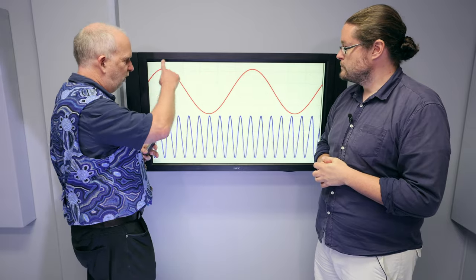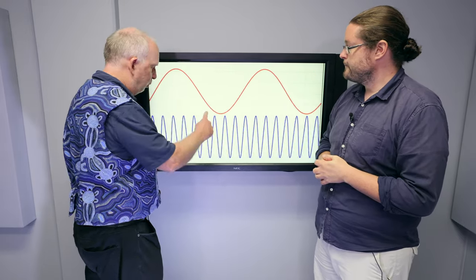And you can have waves like the red one at the top, which have a long wavelength, or the blue at the bottom which have a short wavelength.